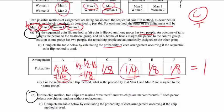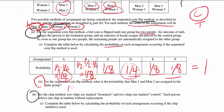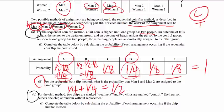That's part I. For part II, using the sequential coin flip method, what's the probability that man 1 and man 2 are in the same group? That's either assignment A or assignment D, so one fourth plus one fourth gives one half.